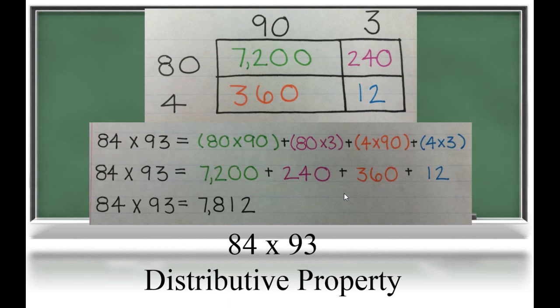Now we're moving into multiplying by larger numbers. Students will go back and use the same strategies they did for multiplying by smaller numbers, and now just apply them to the larger numbers. Let's look at the distributive property. So we broke our numbers into 80 and 4 and 90 and 3. Now we're just going to multiply each part and record it in the box.